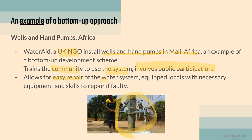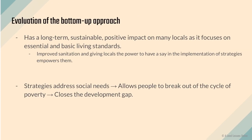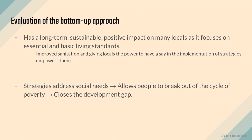The system also allowed for easy repair of the water infrastructure. The NGO equipped the locals with the necessary equipment and skills to repair it if faulty. This empowers the locals — you give them their basic needs and the power to fix things themselves, to take part, and to have a say. They get to provide and maintain their own source of clean water.